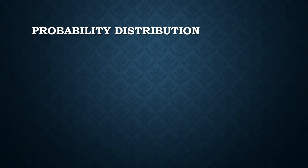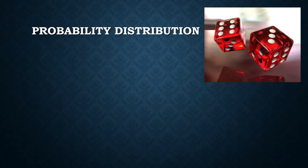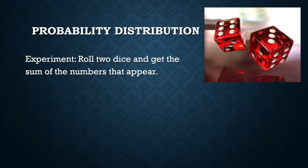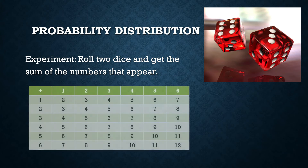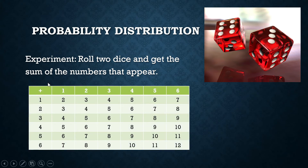Now let us level up our experiment. Let us say we will throw two dice and pay attention to the sum of the numbers that appear. The possible sums are 2, 3, 4, 5, 6, and so on. The rows represent outcomes from die 1 and the columns represent outcomes from die 2, and the numbers inside the table are the sums. Our goal here is to show how to produce a probability distribution.